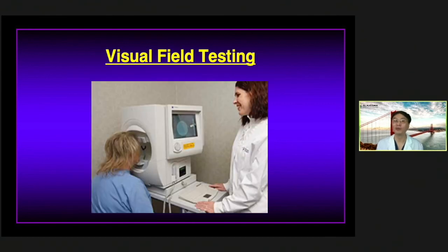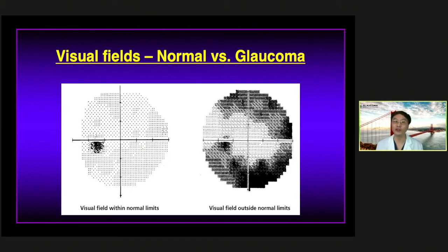Visual field testing is the most cumbersome test glaucoma patients have to take — somewhere between five and up to 20 minutes per eye — where you click a button every time you see a light in the periphery. It lets us know how much vision you've lost and lets us monitor progression. A normal visual field shows the patient hitting the button for all peripheral spots, with only a physiologic blind spot. In severe glaucoma, dark areas show where the patient could not see, typically in the peripheral field. Most of us don't use our peripheral vision, which is why you may lose significant peripheral vision without knowing it until it encroaches on central vision.